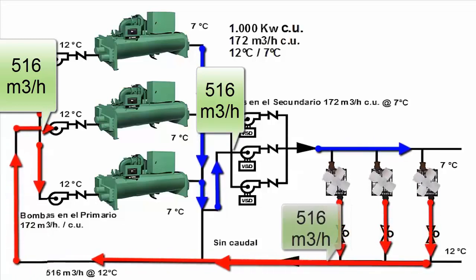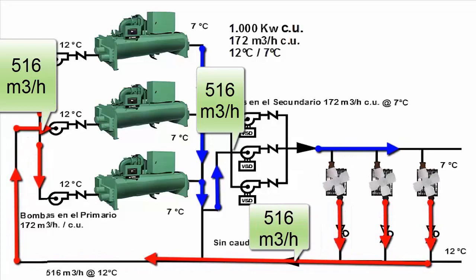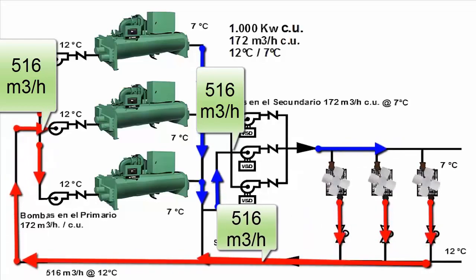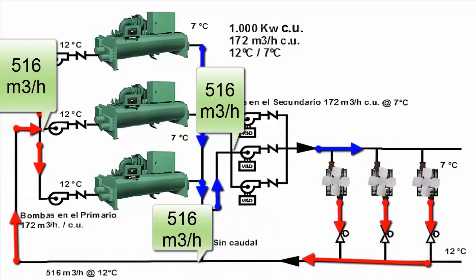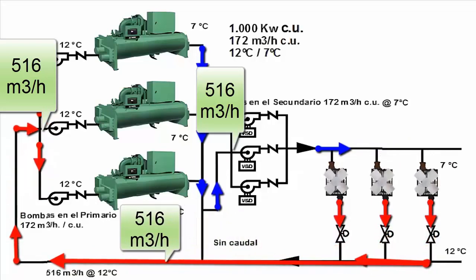This flow is sent by the three pumps, which are operating at 100% capacity, and then returns after passing through all the building's applications to return to the primary circuit.